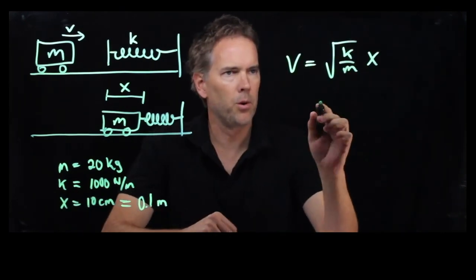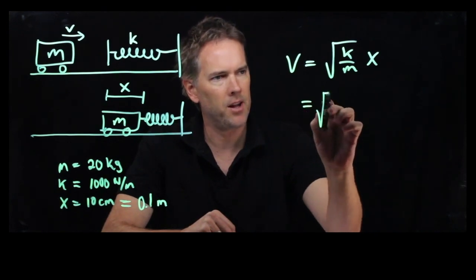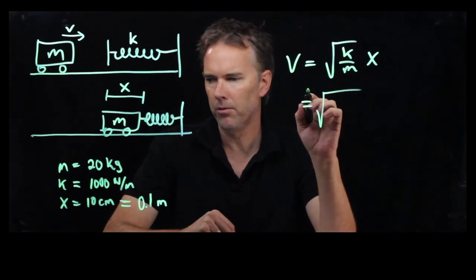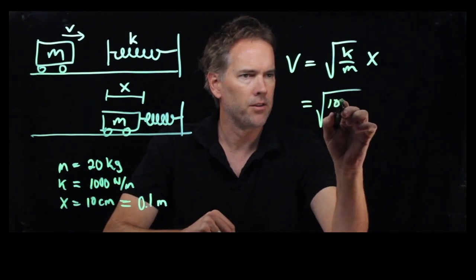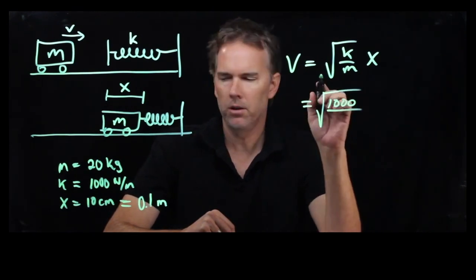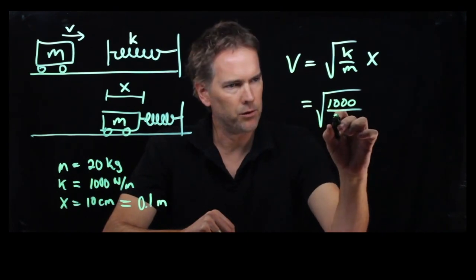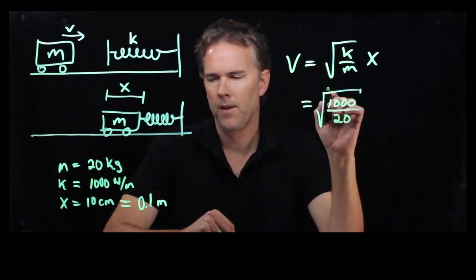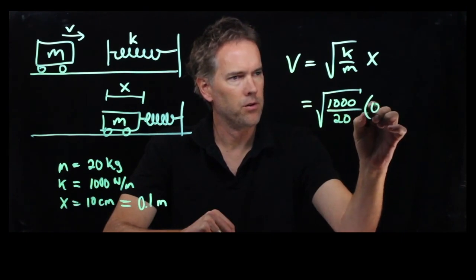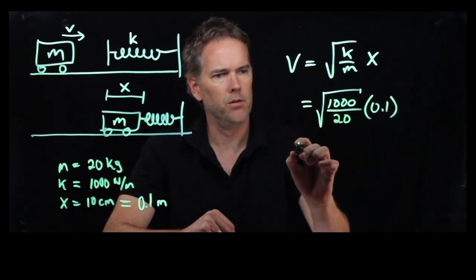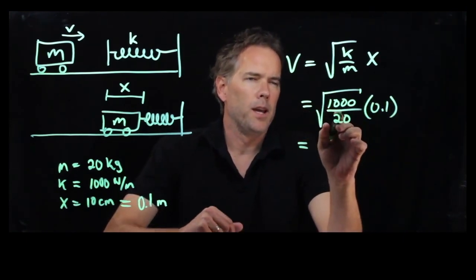Now let's plug it into v and see what we get. What we said was v was square root of k over m times x. We now have all those numbers. We can plug it in. SI units, so we don't have to write down the units every time. k is a thousand, m was 20 kilograms, x is 0.1 meters.